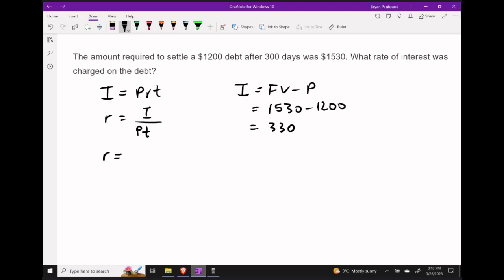That means we can come back to our original formula. We'll put in $330 for I. We have a principal amount of $1,200 and then we know the term of our debt was 300 days. We're going to input that as 300 over 365.